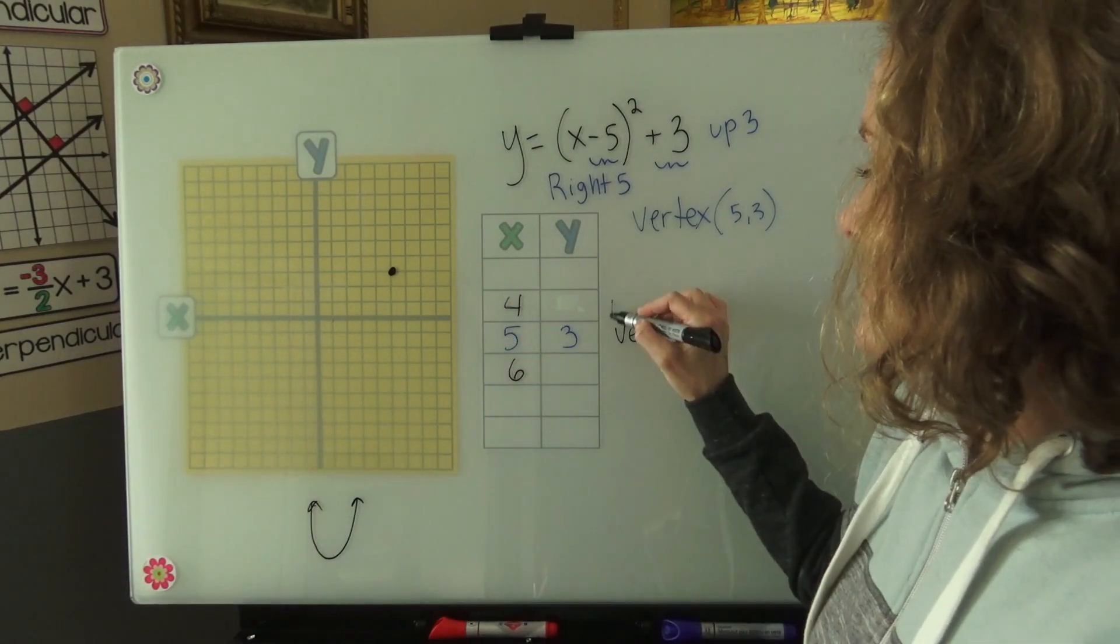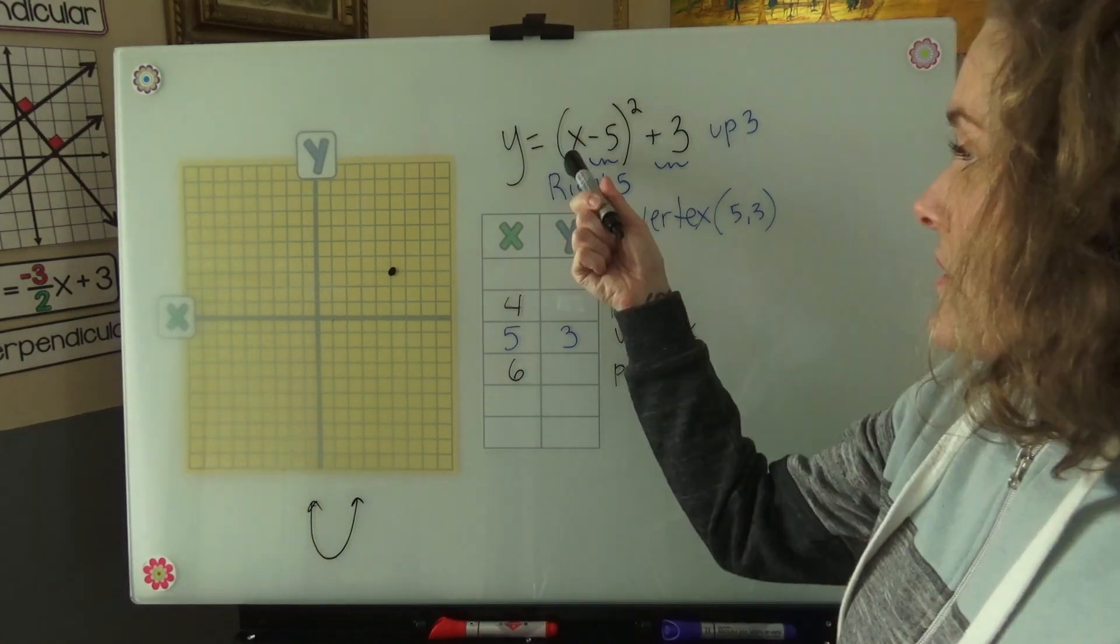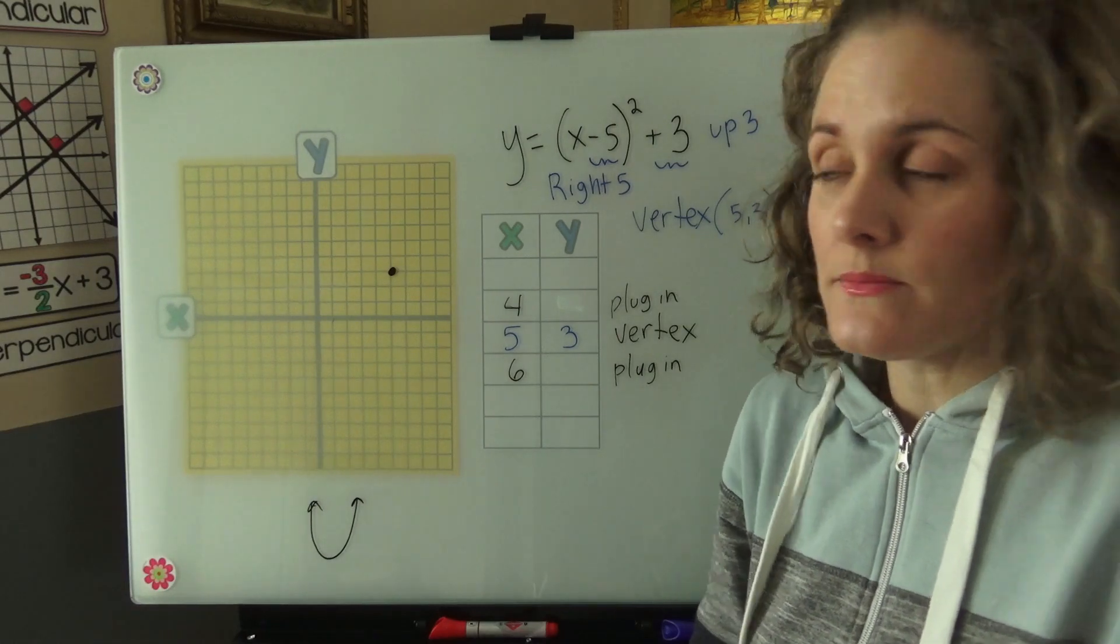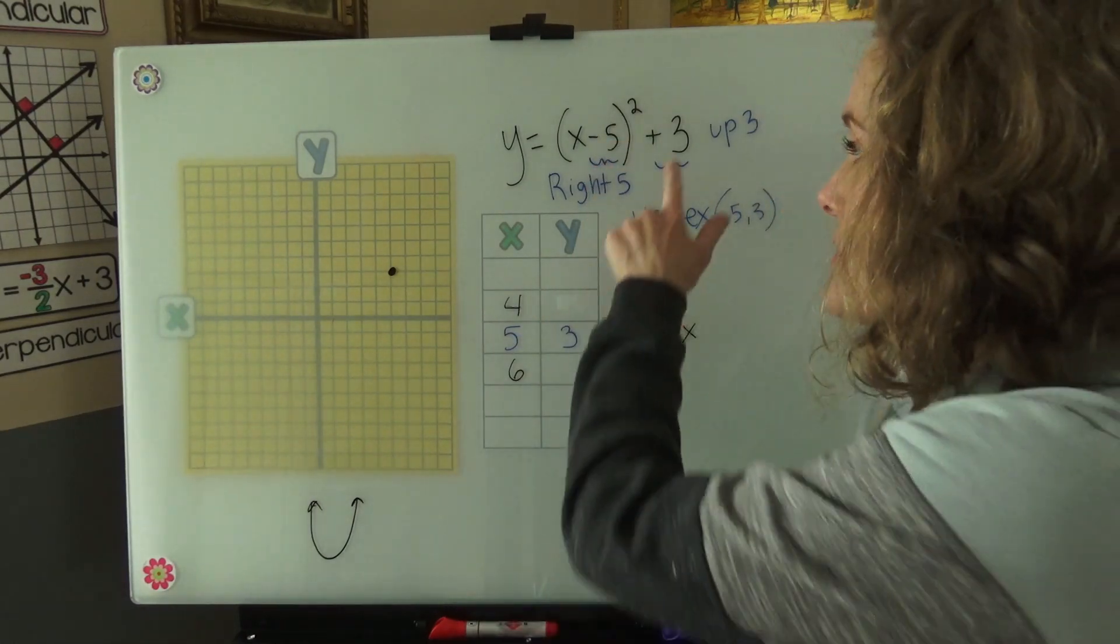Now we just have to plug it in. Plug in. 4 minus 5 is negative 1. Negative 1 squared is 1. 1 plus 3 is 4.